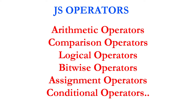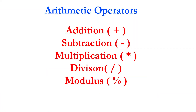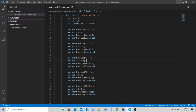Let's have a look at all operators one by one. The first one is arithmetic operators — addition, subtraction, multiplication, division, and modulus operators come under arithmetic operators. Let us consider a variable a which holds the value 10, and variable b which holds the value 20.